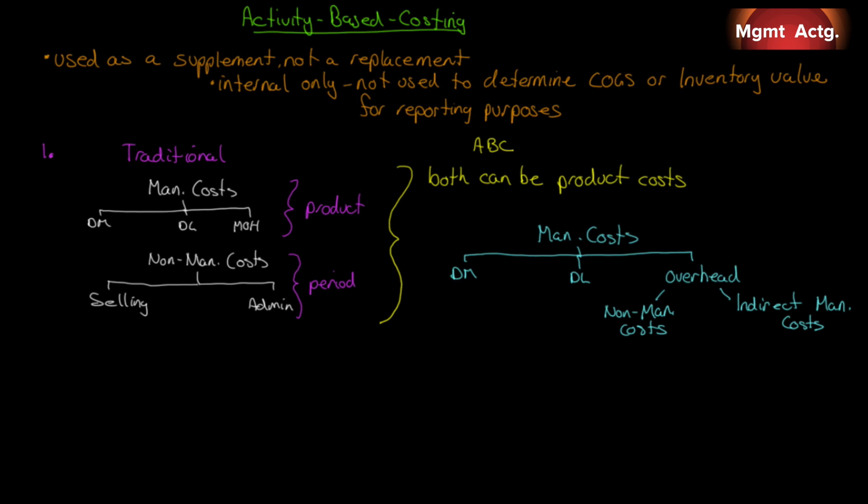Whether we include a cost in overhead under ABC is based on a cause and effect basis only. In other words, if an activity can be seen to have caused a cost, it's included.